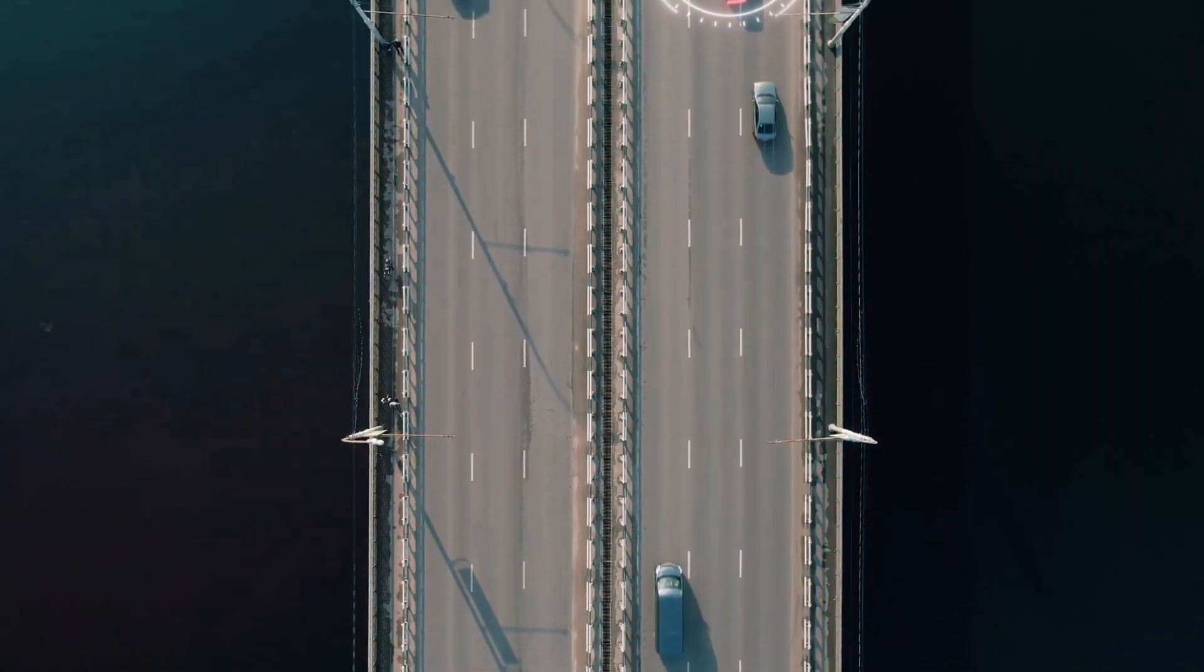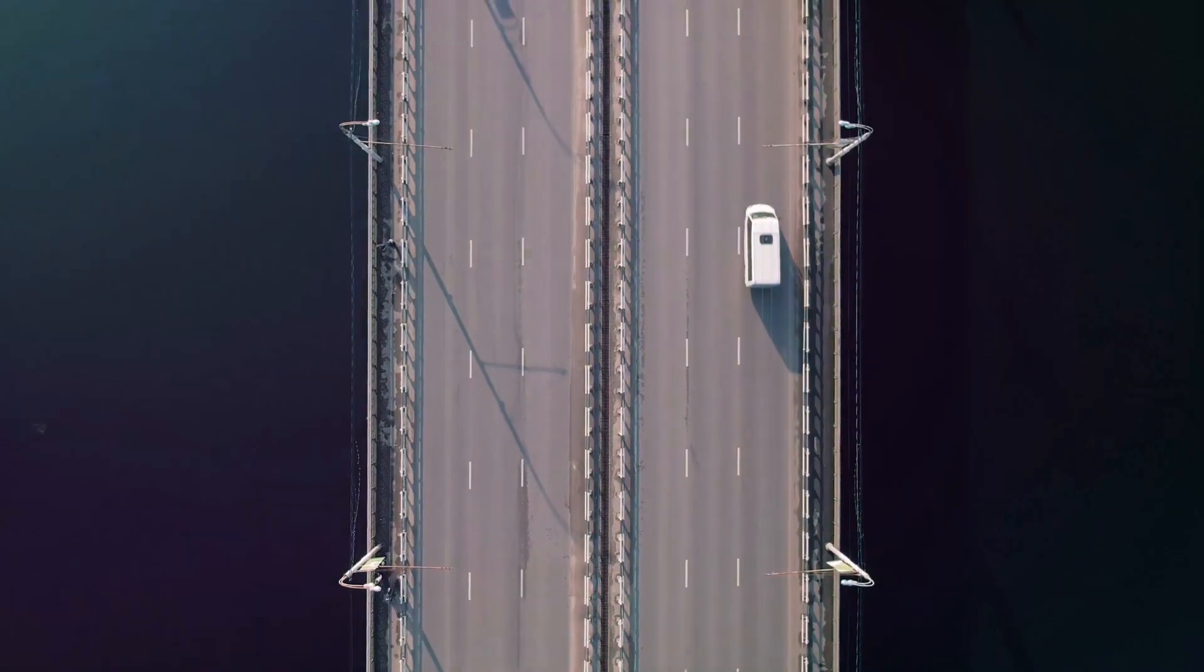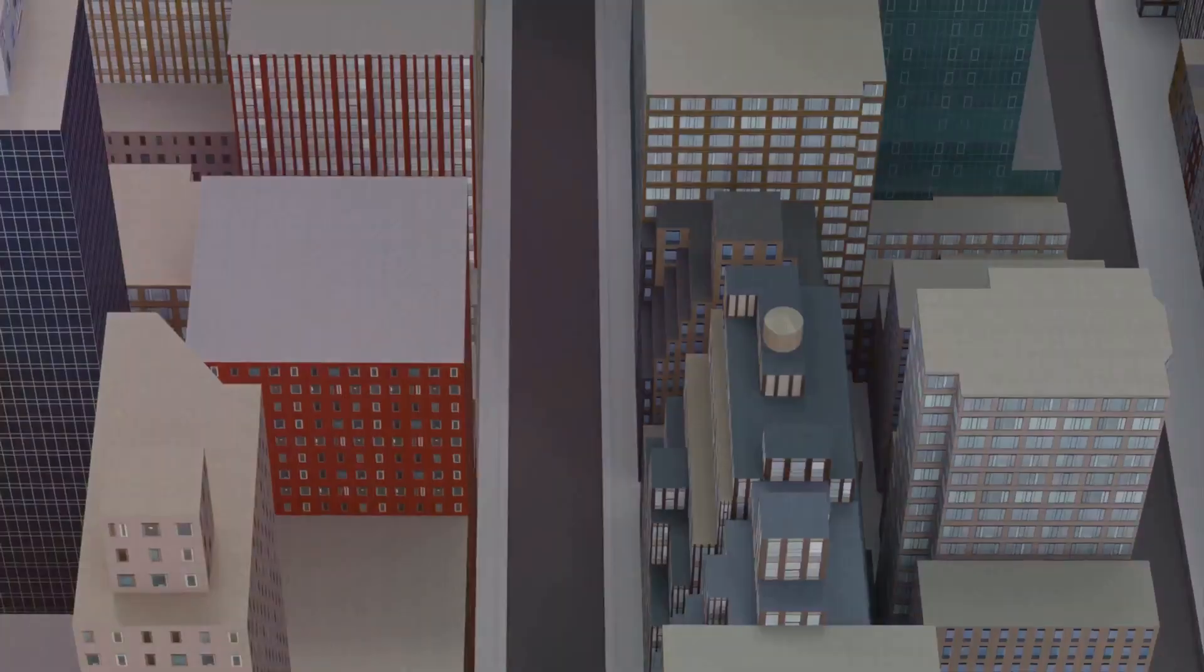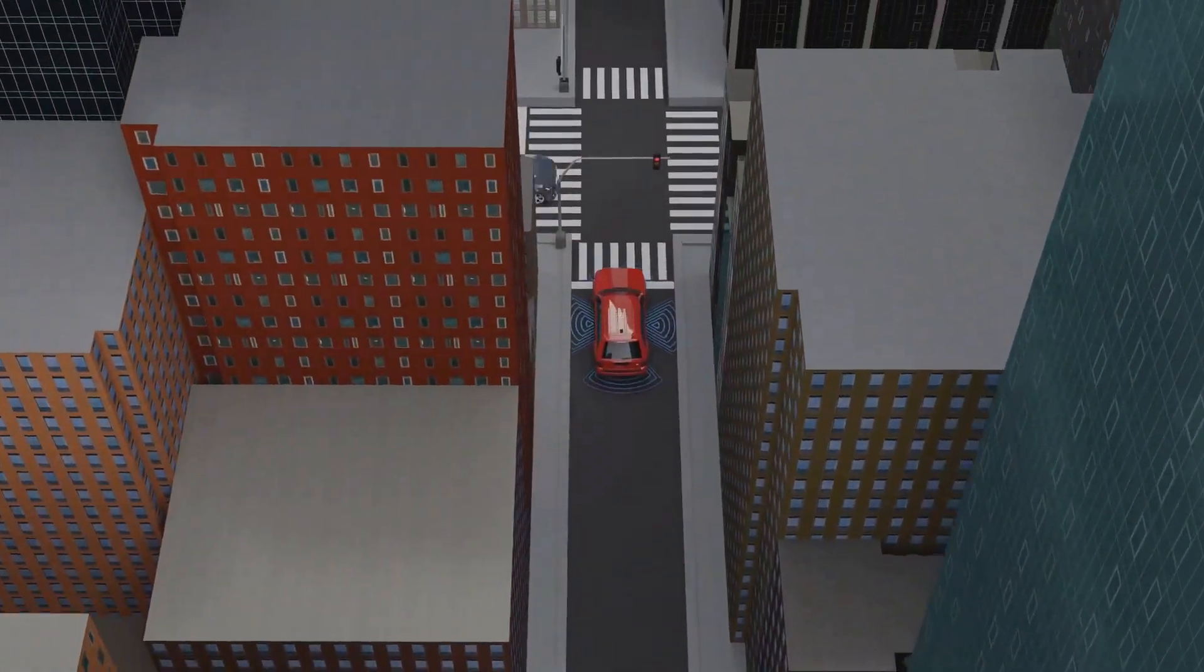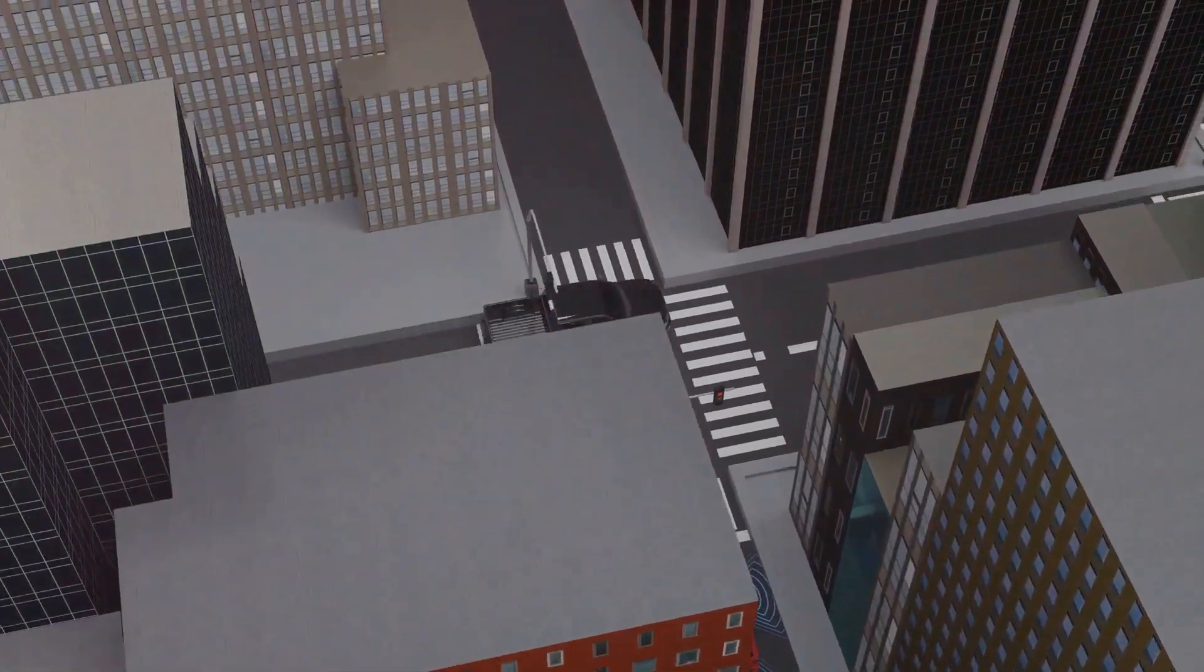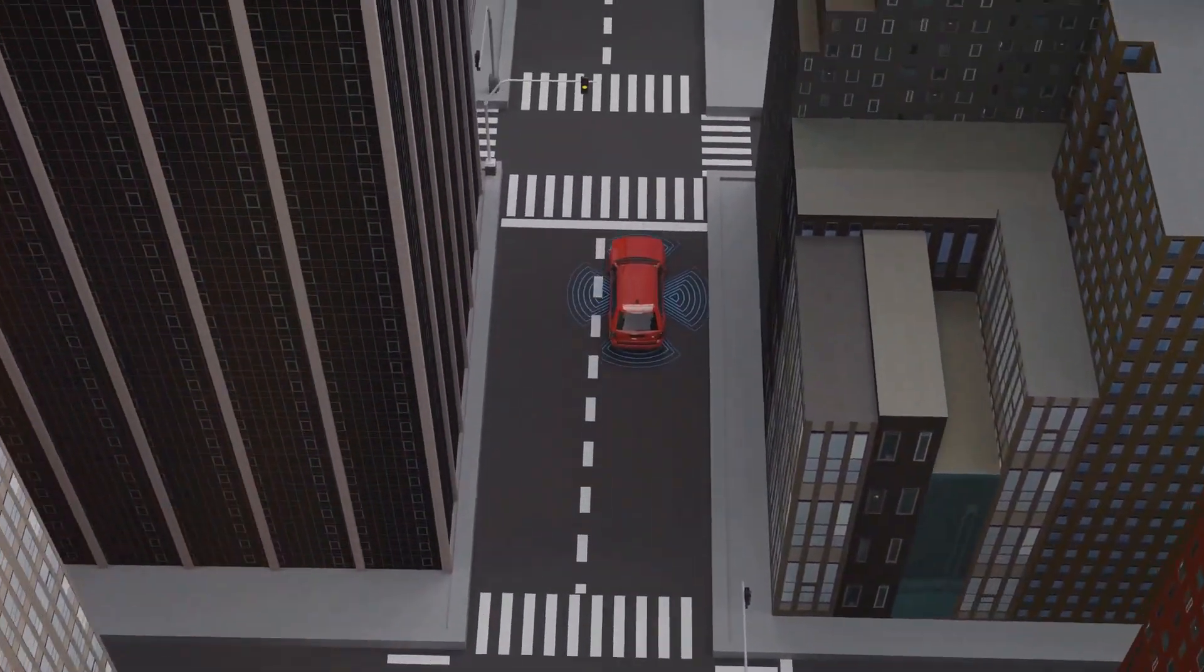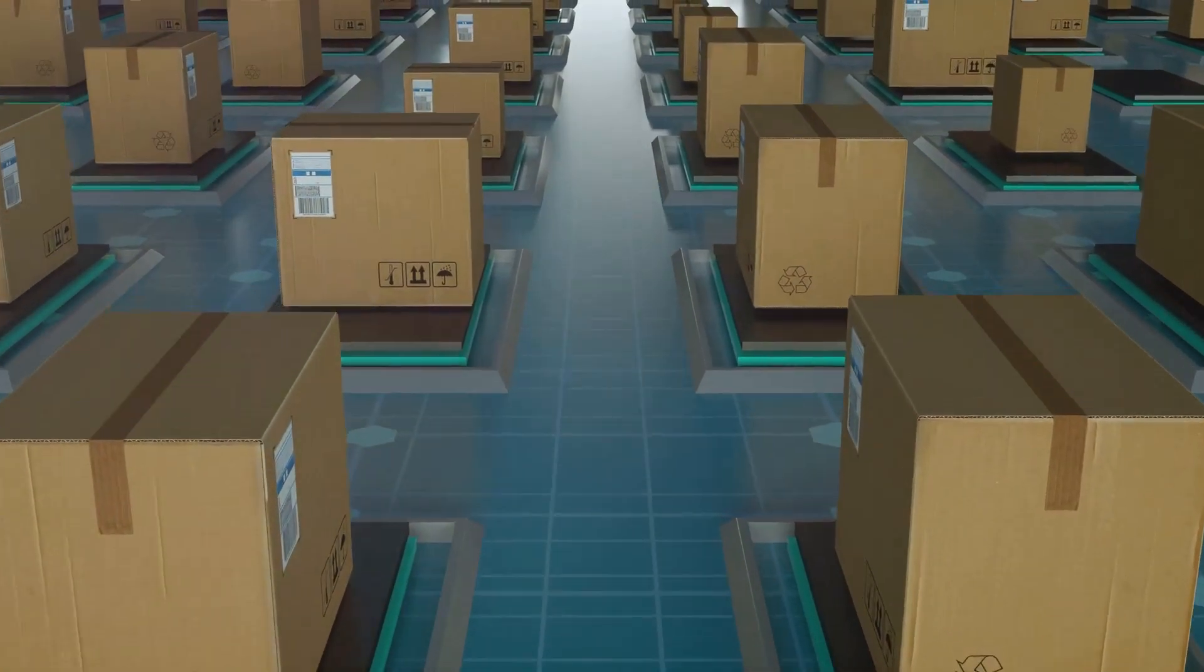Autonomous vehicles, once a mere figment of science fiction, are now a reality with AI taking the wheel. These smart vehicles, equipped with cutting-edge AI algorithms, use sensors and cameras to detect and respond to their surroundings. They can anticipate potential hazards, make split-second decisions, and even learn from their experiences on the road.